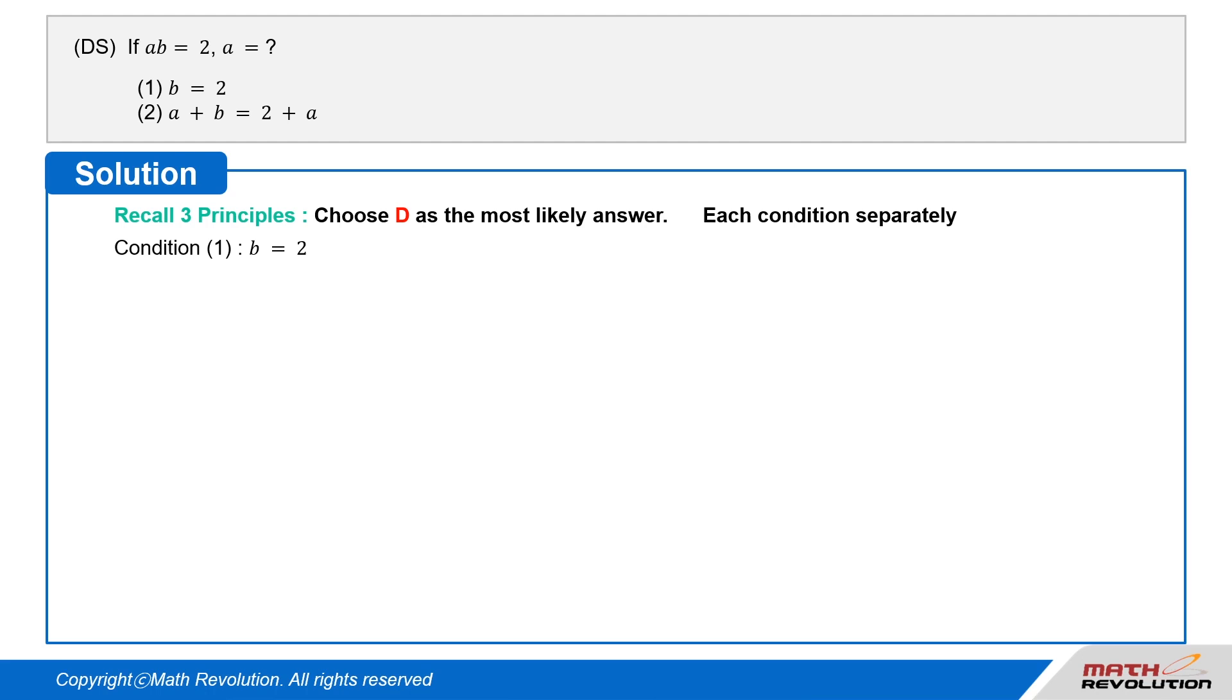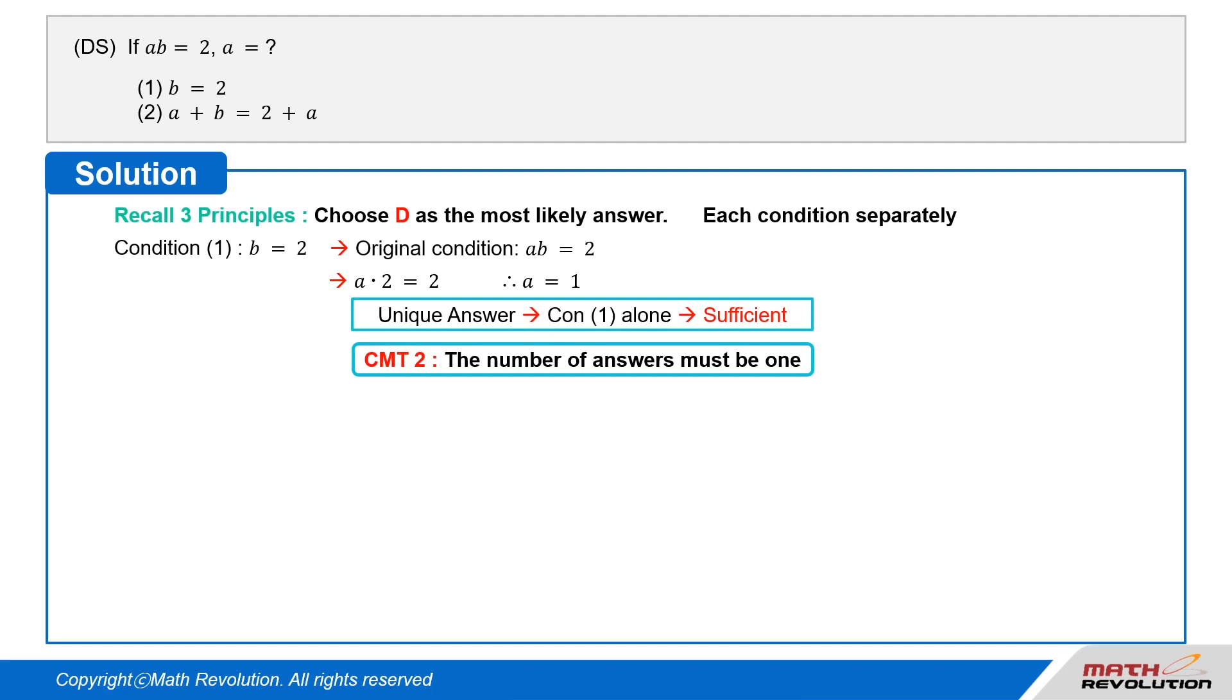Condition 1 tells us that B equals 2. Substituting B equals 2 in the original condition A times B equals 2, we get A times 2 equals 2, or A equals 1. Since the answer is unique, the condition is sufficient by CMT2, which means that the number of answers must be 1.